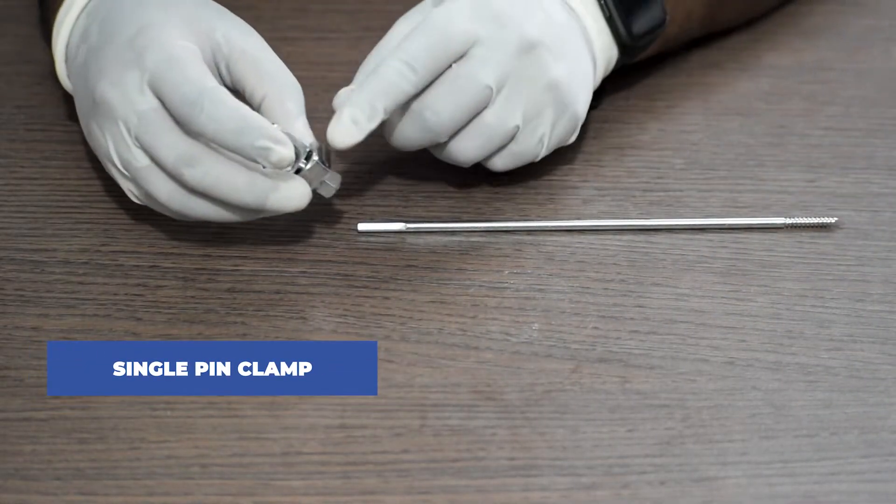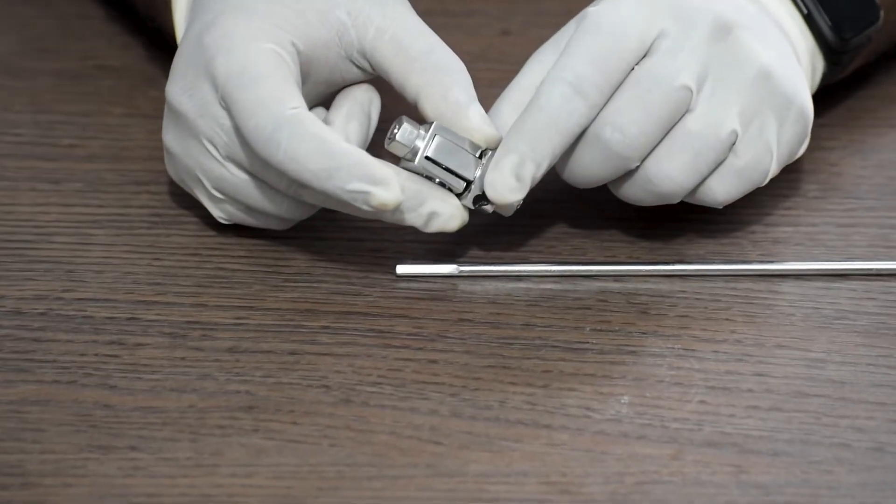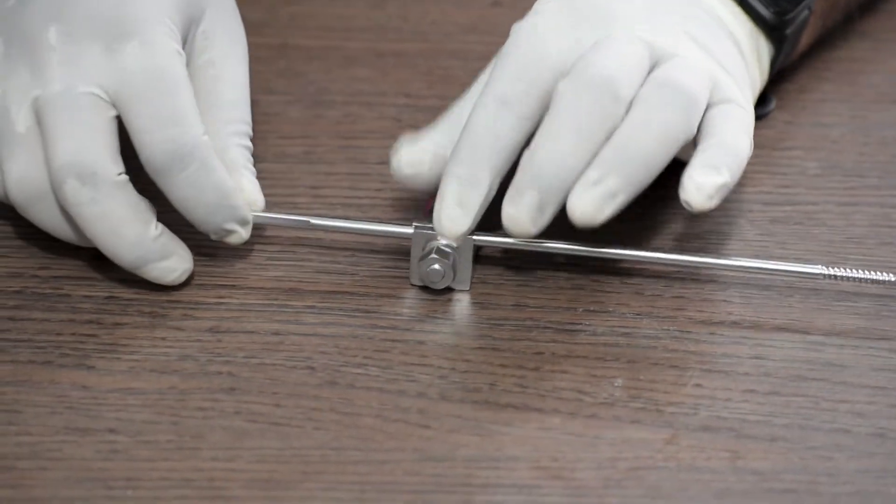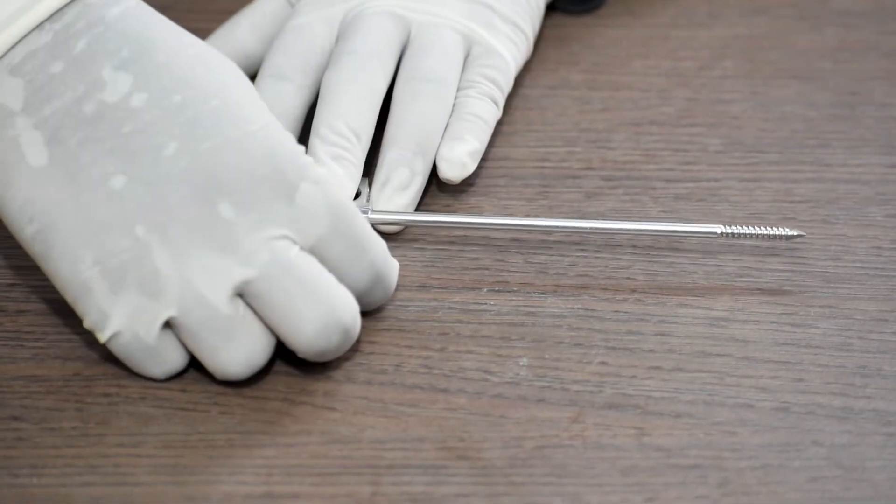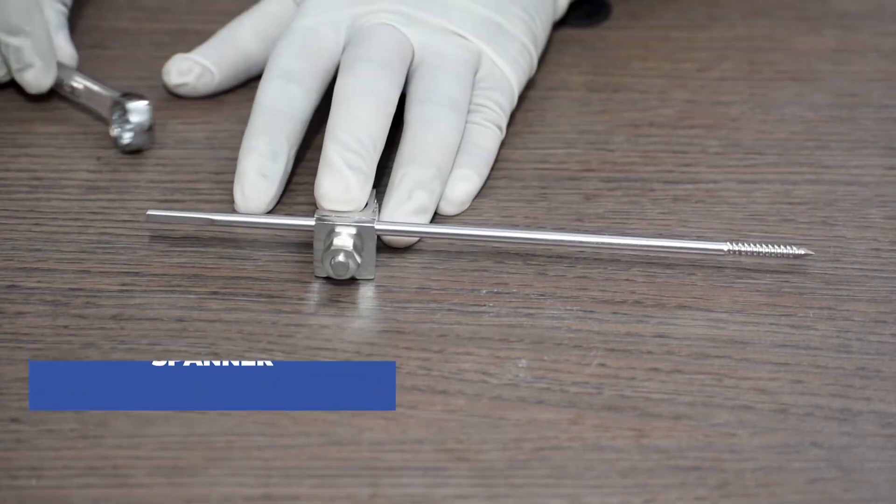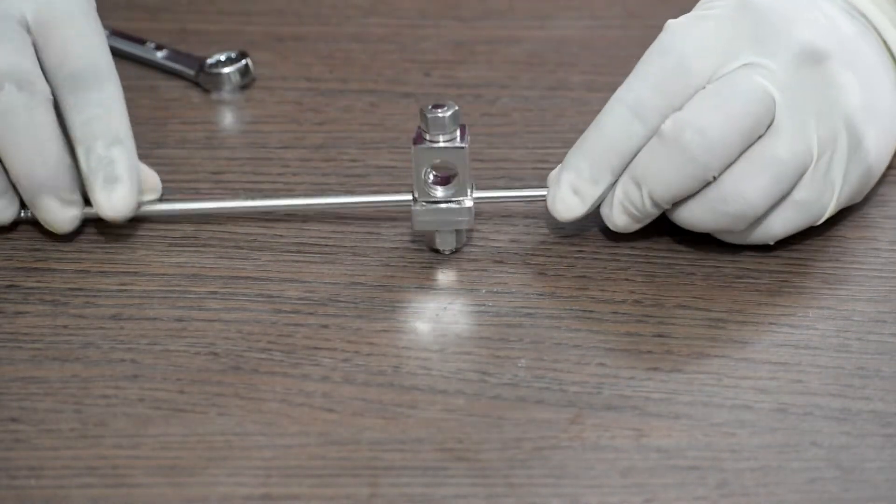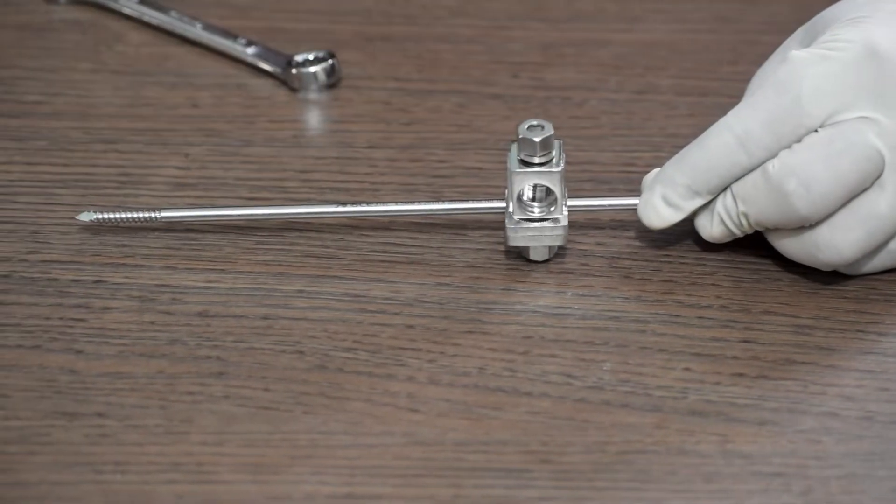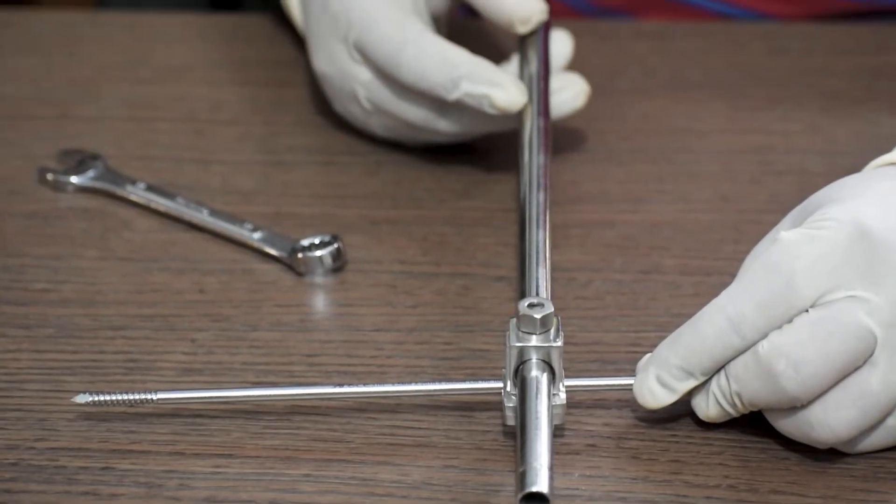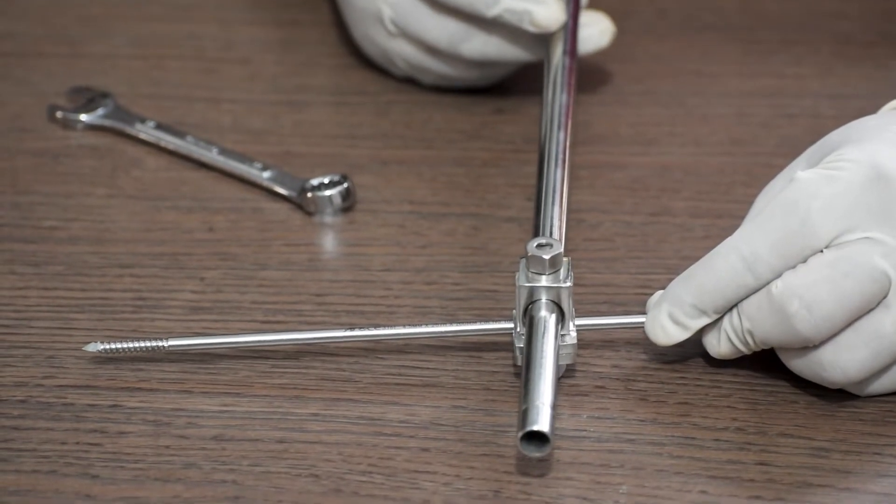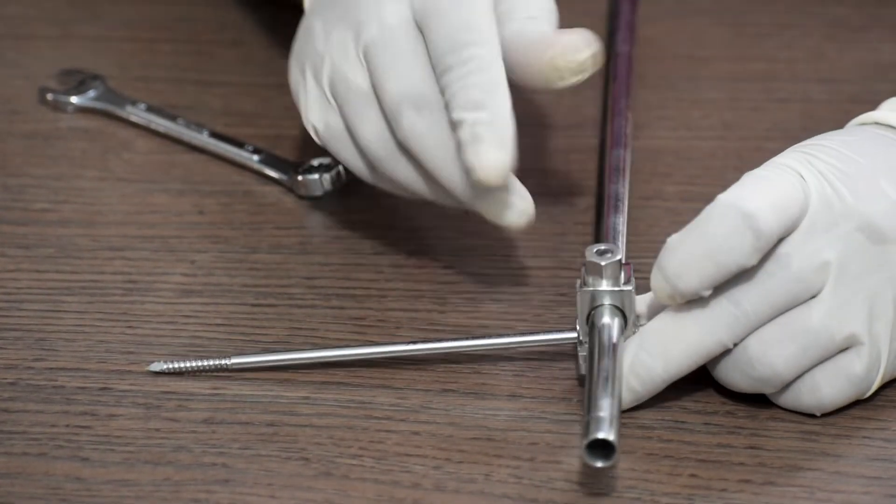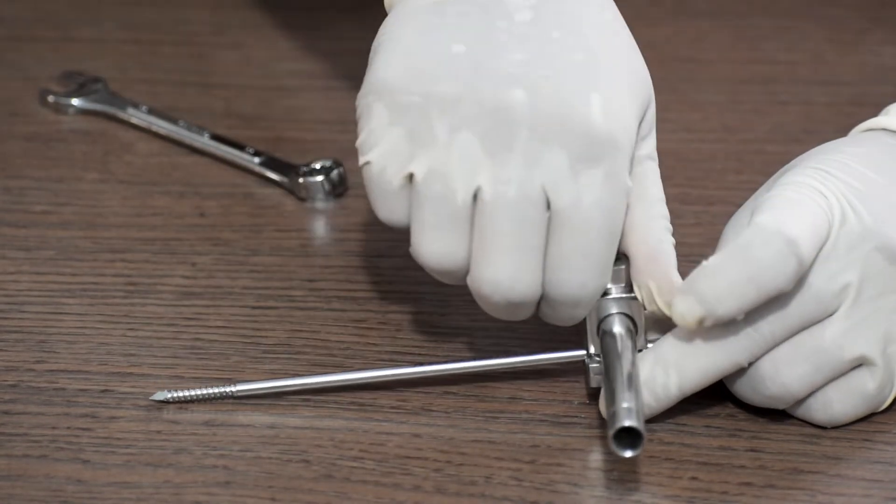Next we take the single pin clamp and we insert the sand spin through this pin fixator. Once inserted, we will tighten the nut with the help of the spanner we have. In this hole we will be inserting the tubular rod. This is the tubular rod. Once you have aligned the tubular rod, we will have to do the final tightening with the help of the spanner on this nut.